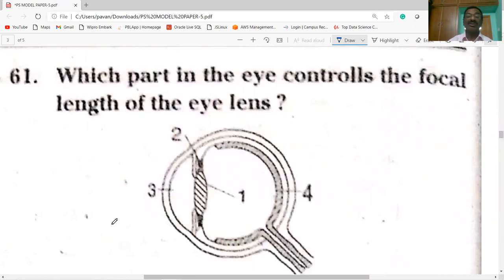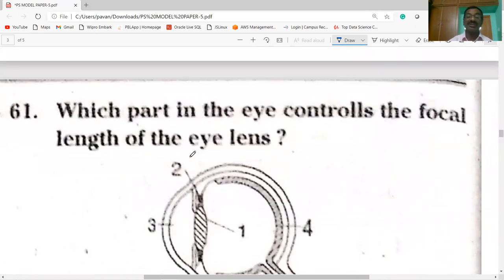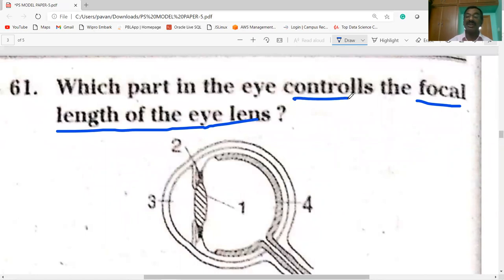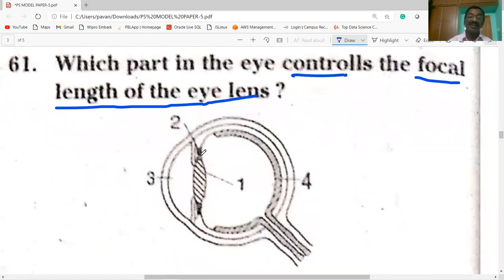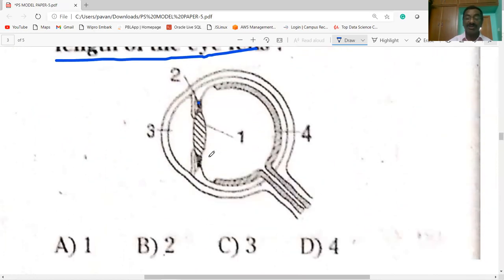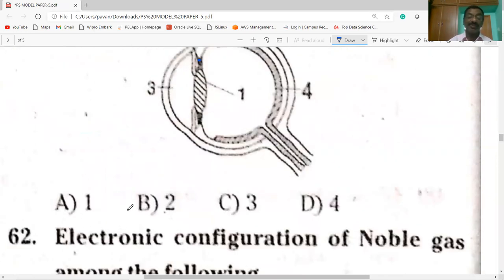Next question on the screen. Which part in the eye controls the focal length of the eye lens? Ciliary muscles. Option B is correct.